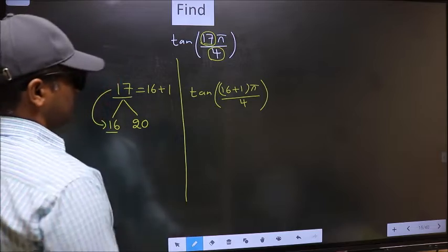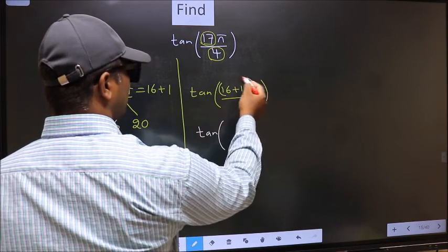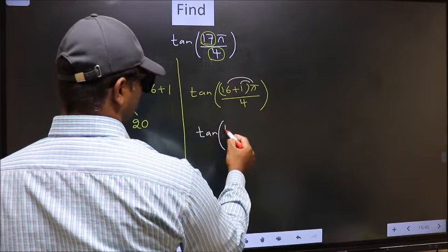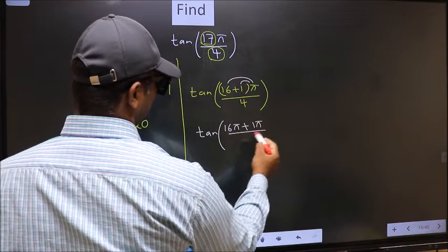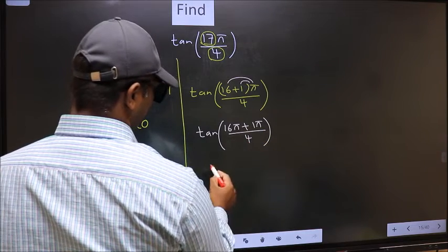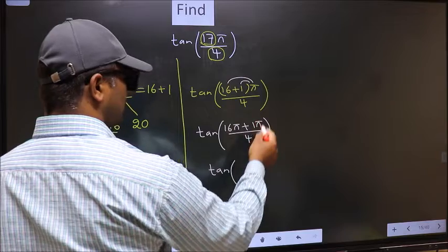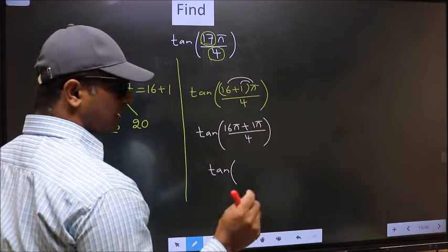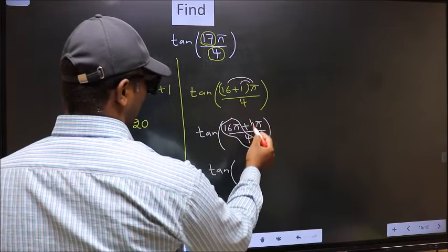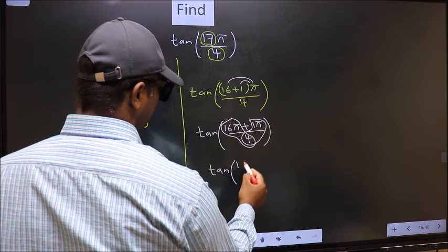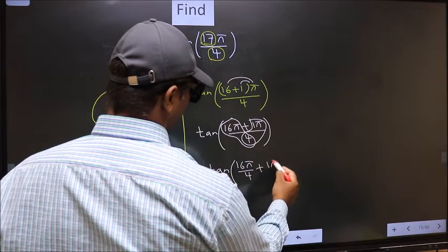Next. Tan. Now, you should open the brackets. You get 16 pi plus 1 pi by 4. Tan. Now, over here, you should split the denominator in this way. That is 16 pi by 4 plus 1 pi by 4.